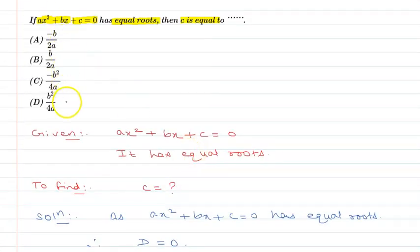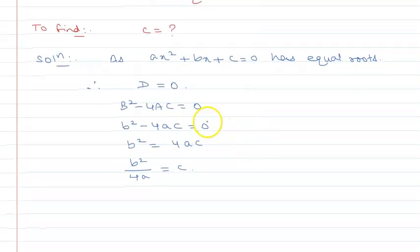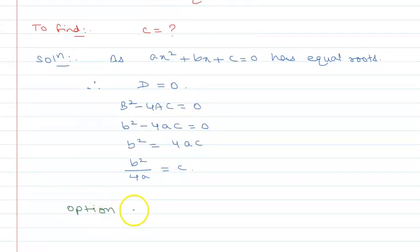Now dividing both sides by 4a, we get c = b²/4a. Checking the options, I can say that option B is correct.